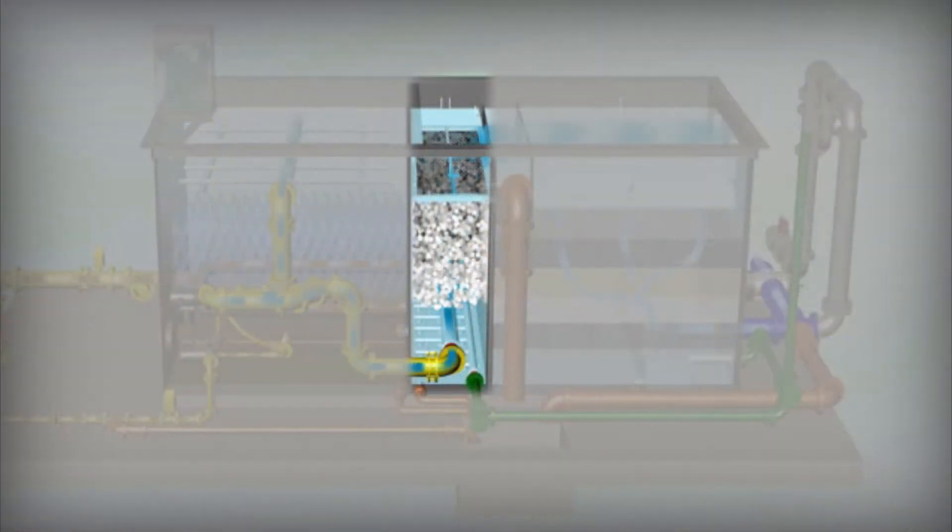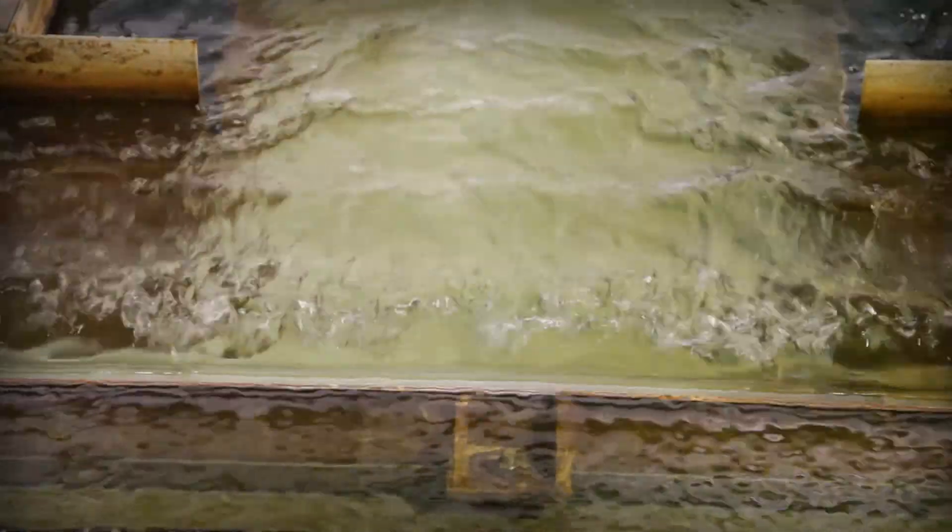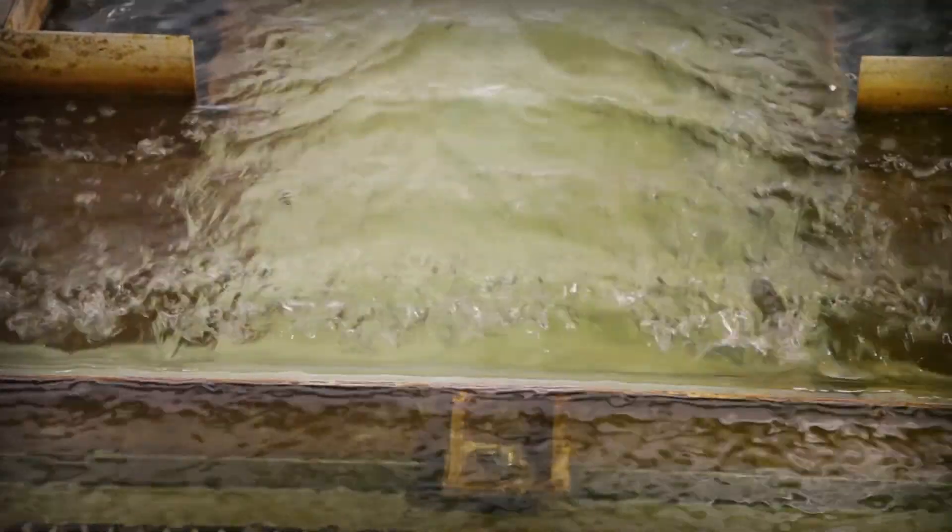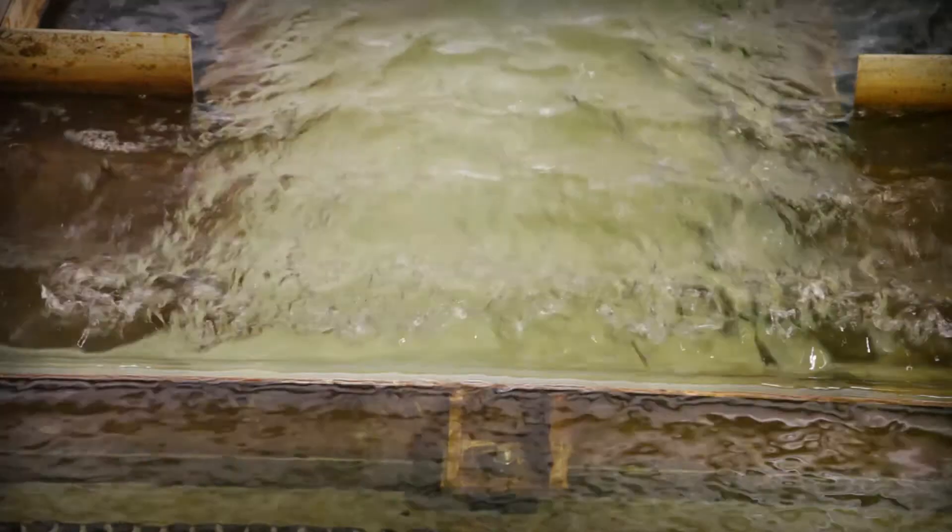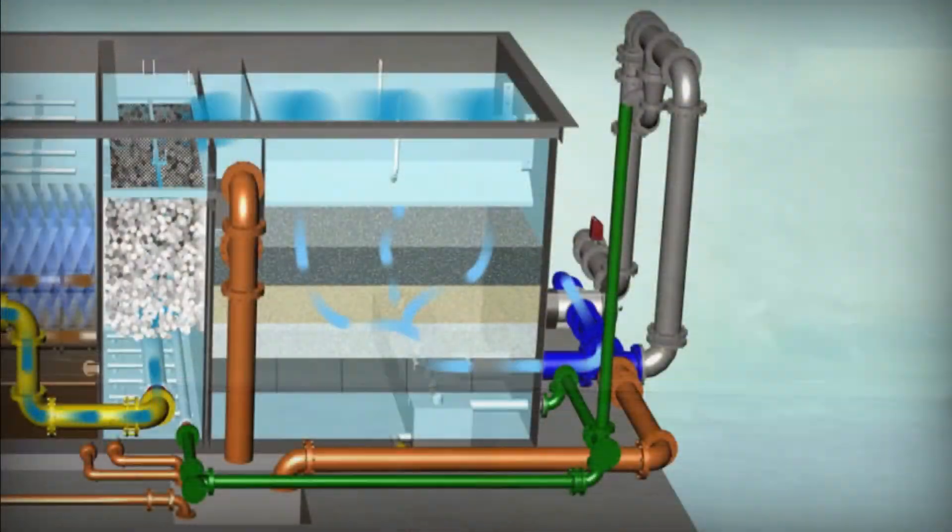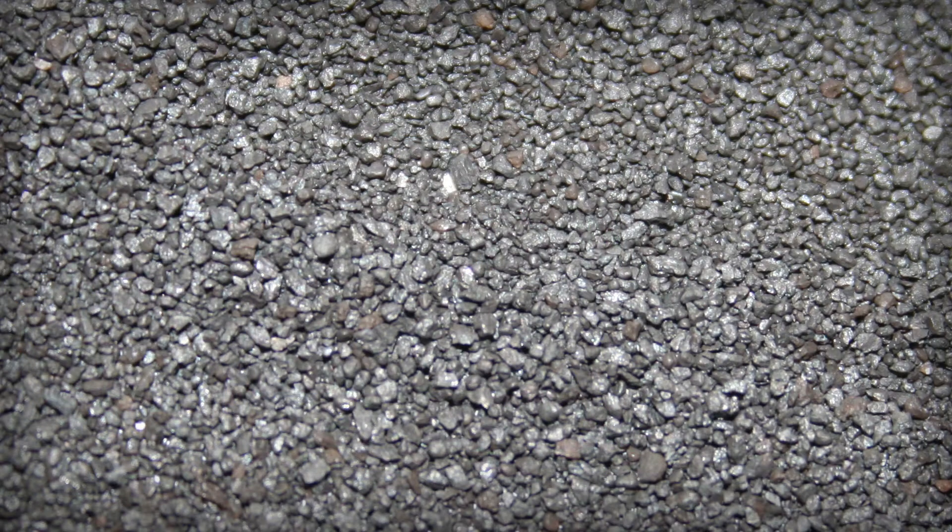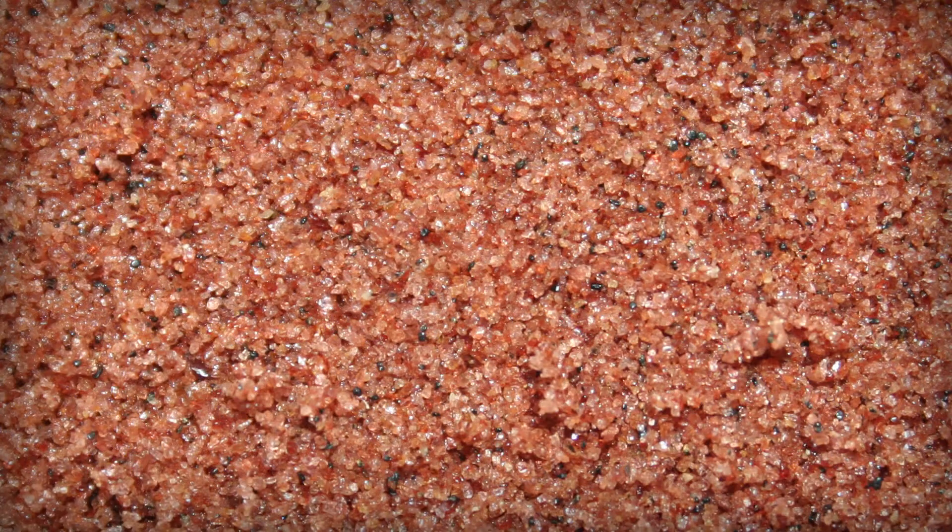The third stage in the Trident HS system is the mixed media filter, which polishes the effluent from the adsorption clarifier. This is the last physical removal stage of the system. Clarified water flows downward through specially selected filtration media consisting of anthracite, sand, and high density garnet.